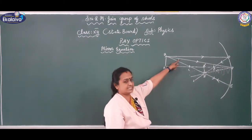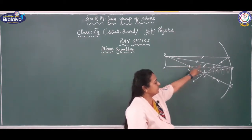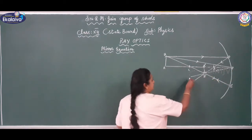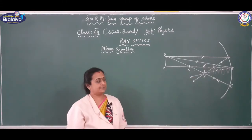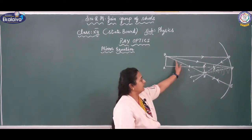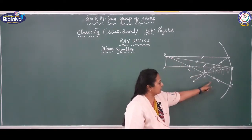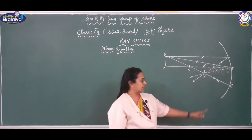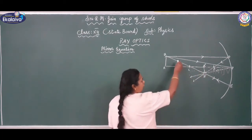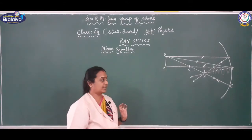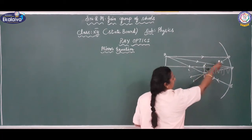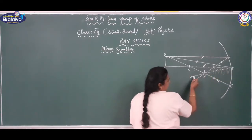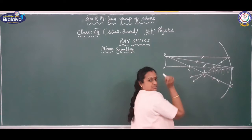The second ray is incident at the pole P and gets reflected — that is the second para-axial ray. The third ray passes through the center of curvature, is incident at point E on the mirror, and is reflected back — it retraces its path.